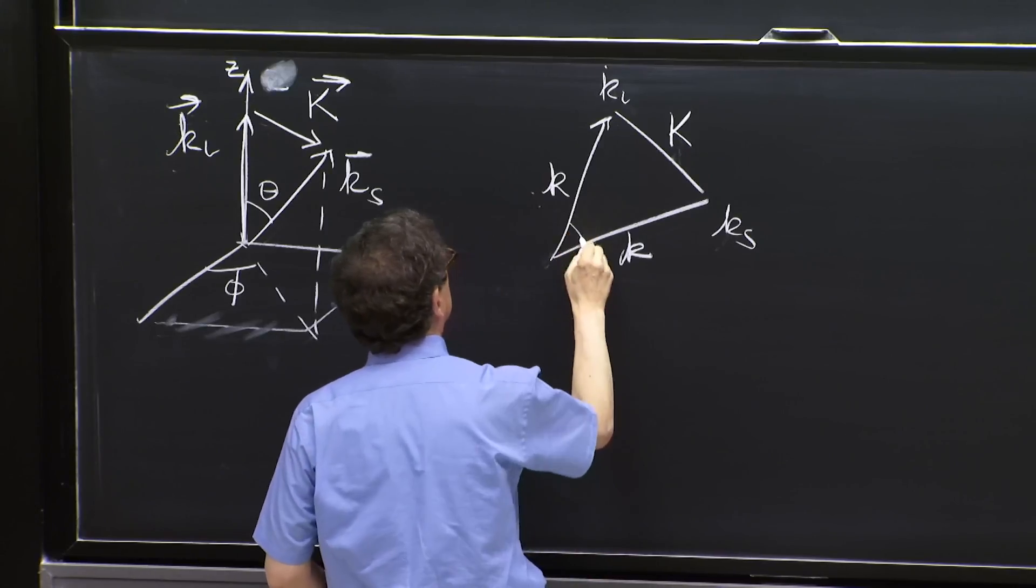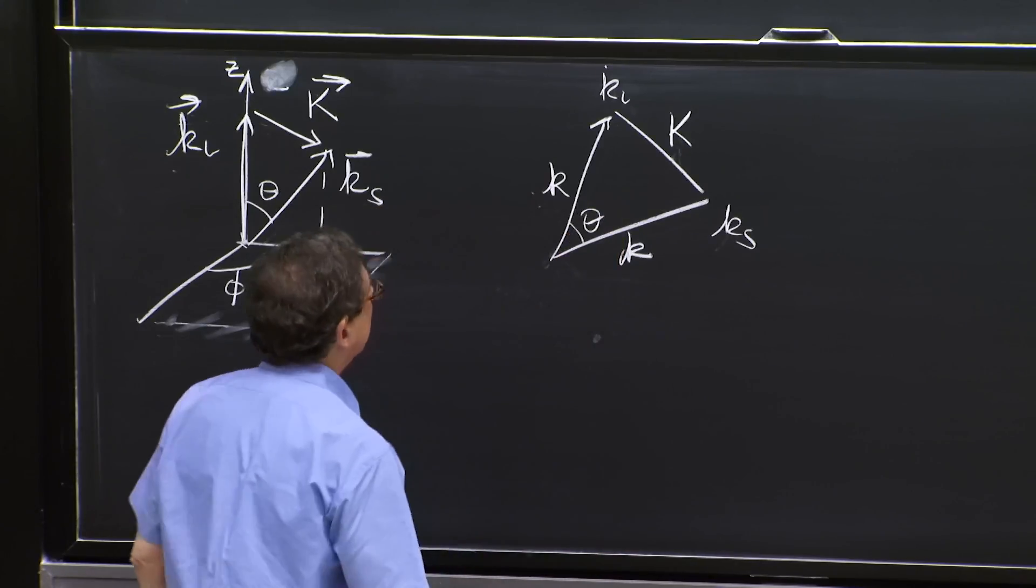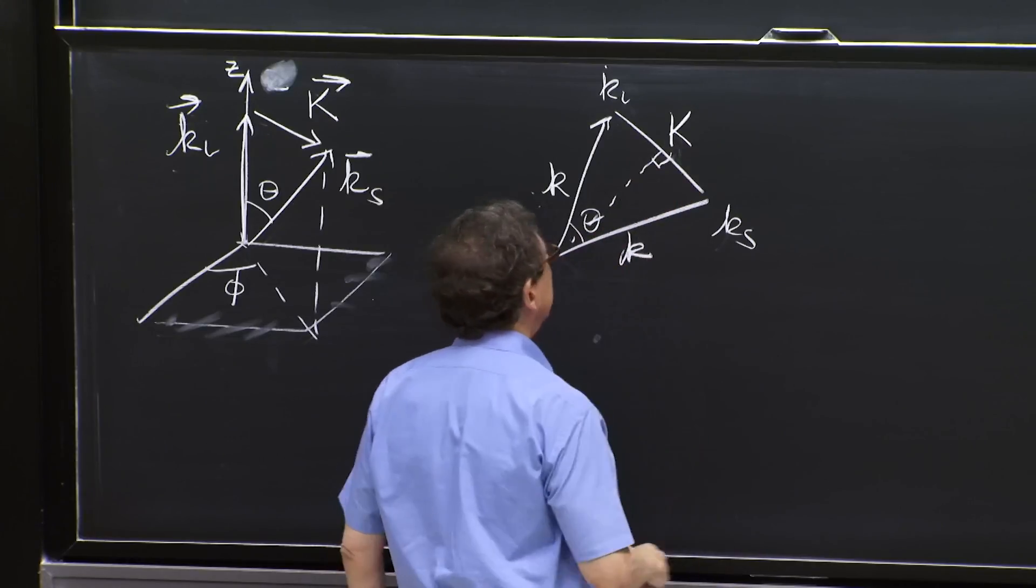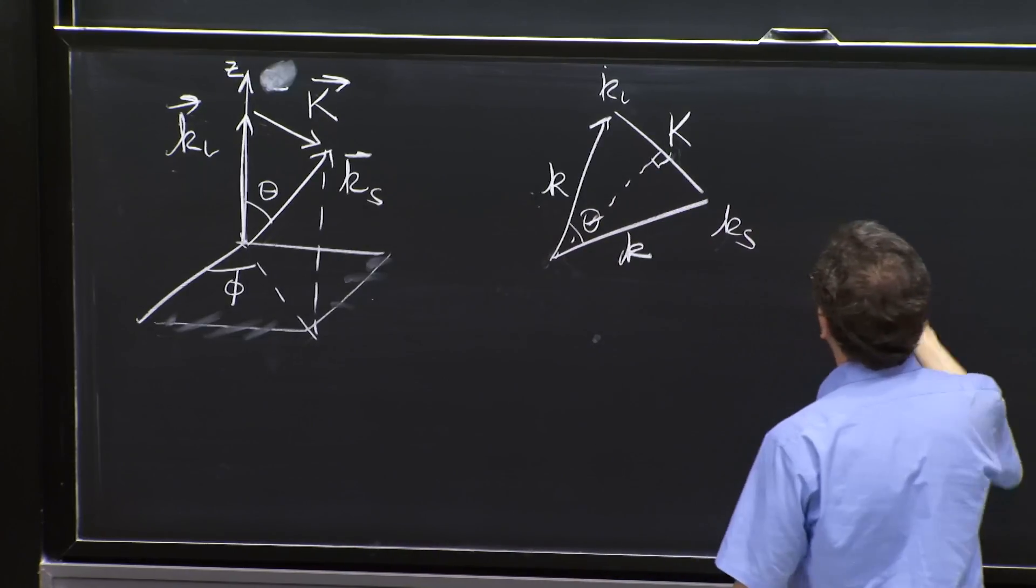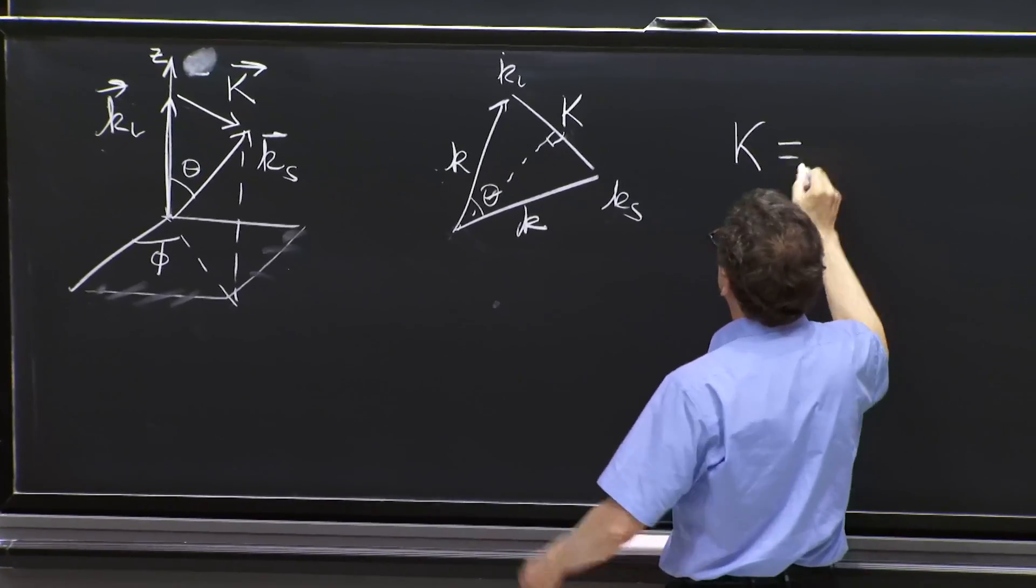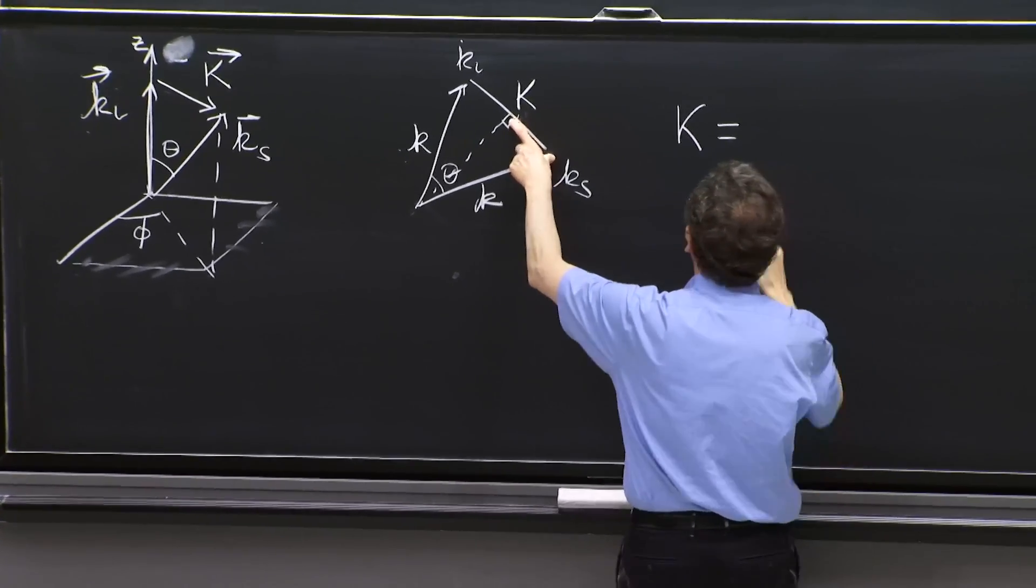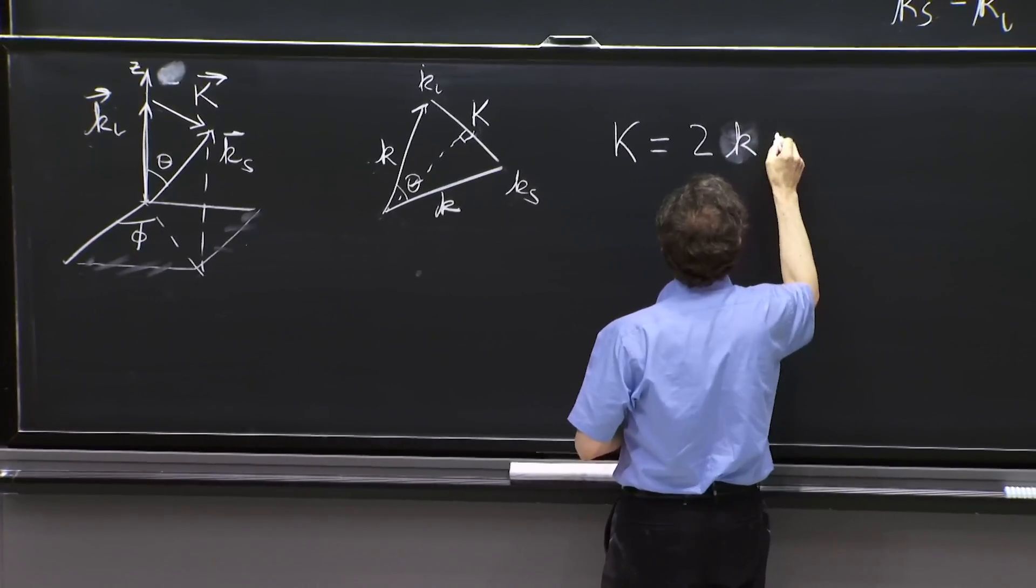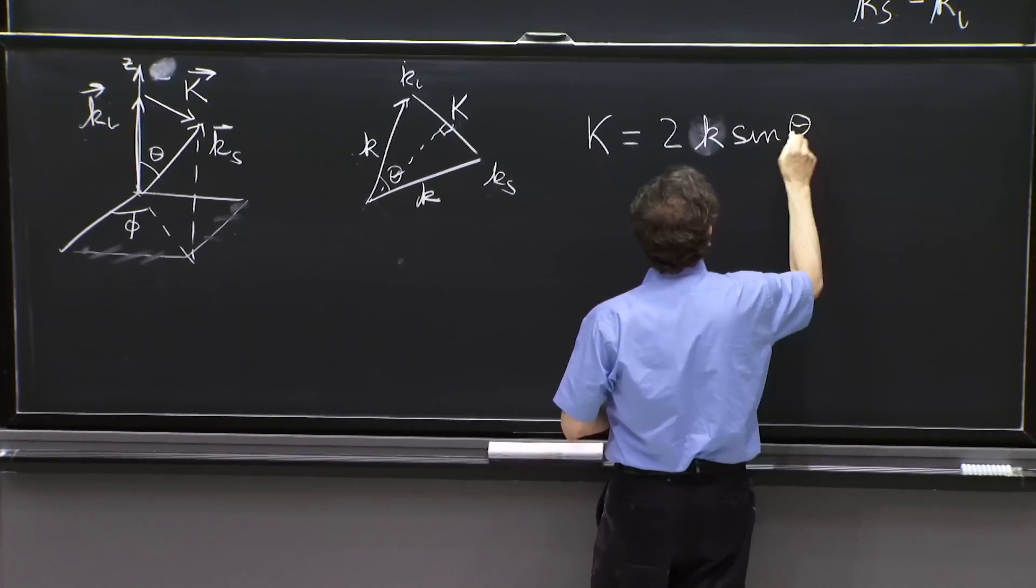So if you drop a vertical line, you see that k is twice this little piece, which is little k sin theta over 2.